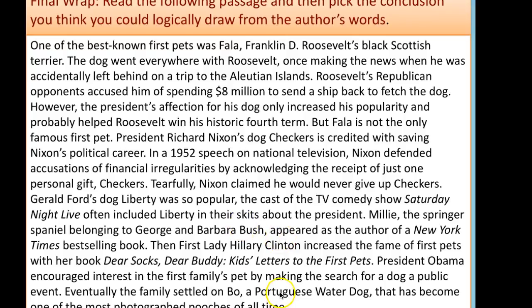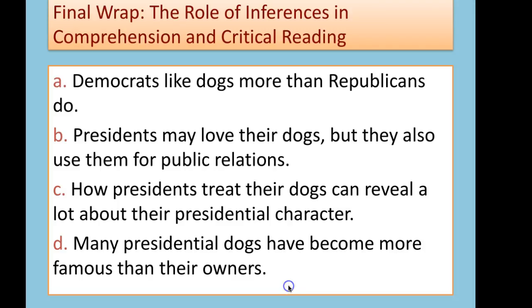Which conclusion can you draw from this paragraph? A: Democrats like dogs more than Republicans. B: Presidents may love their dogs, but they also use them for public relations. C: How presidents treat their dogs can reveal a lot about their presidential character. D: Many presidential dogs have become more famous than their owners. Make your selection. And that concludes Part 2 of the Chapter 6 PowerPoint on the topic of inferences.